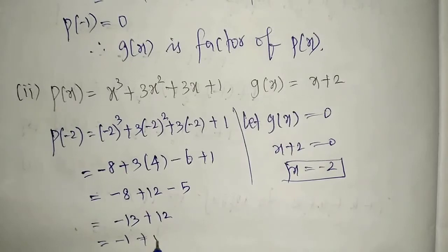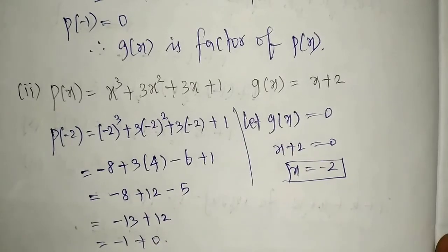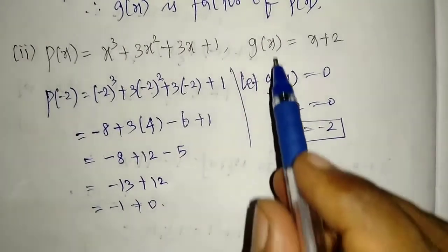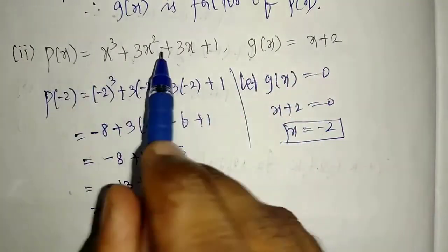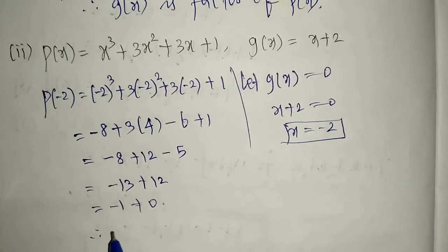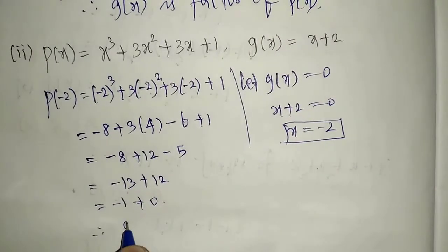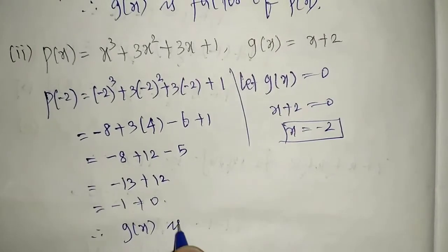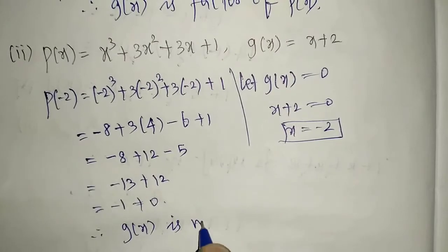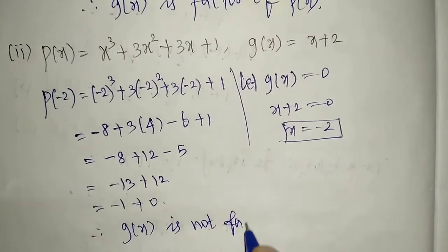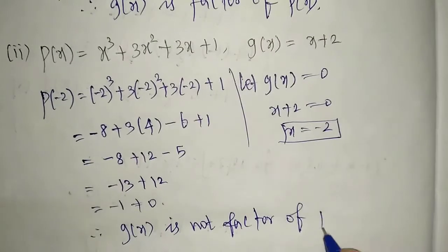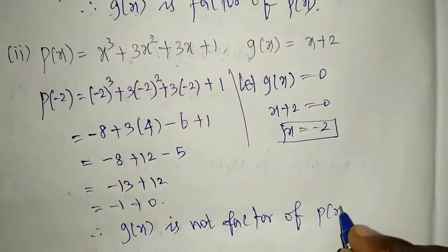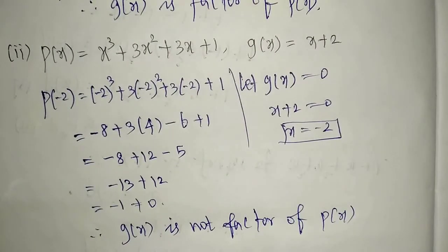Since minus 1 is not equal to 0, the given g of x is not a factor of p of x. Therefore g of x is not a factor of p of x. That is the answer for the second case. Now we will go to the third one.